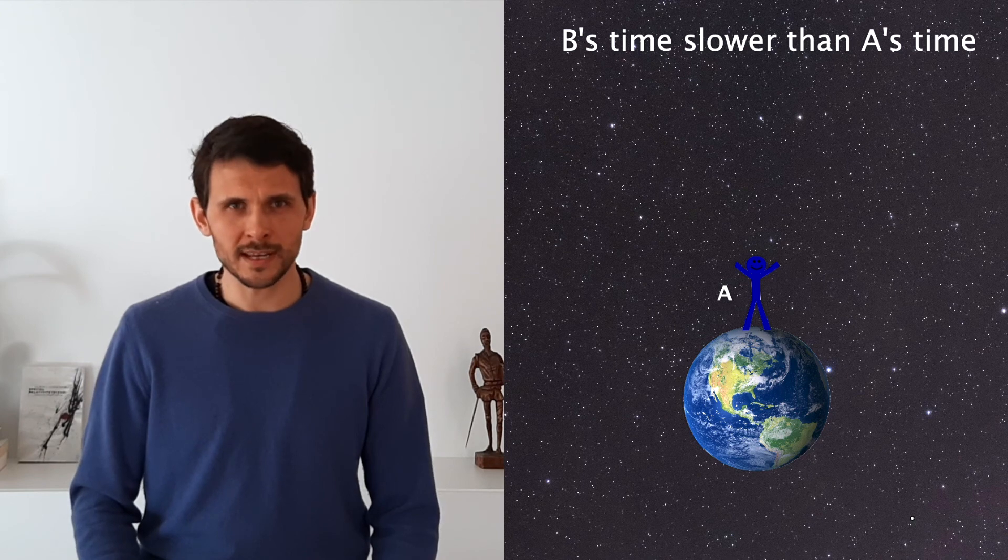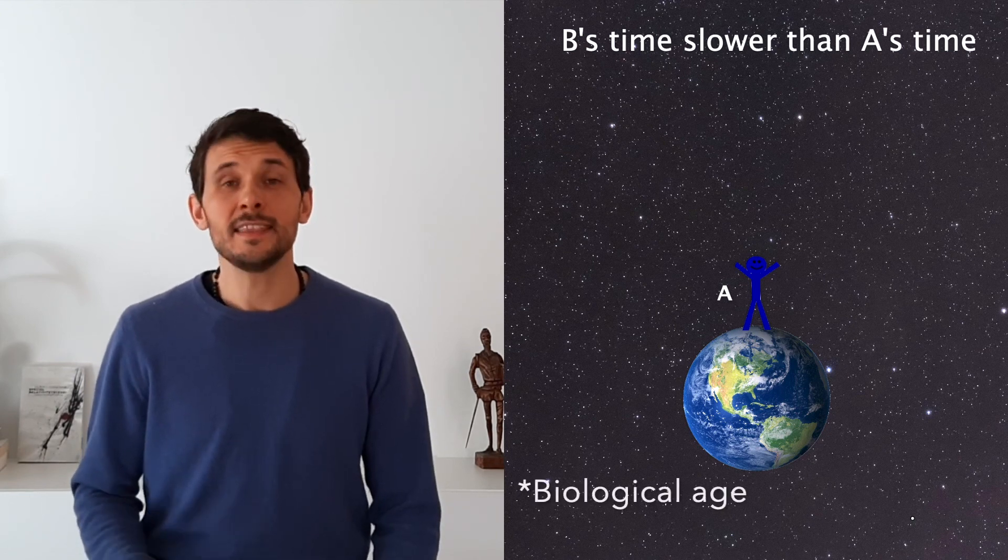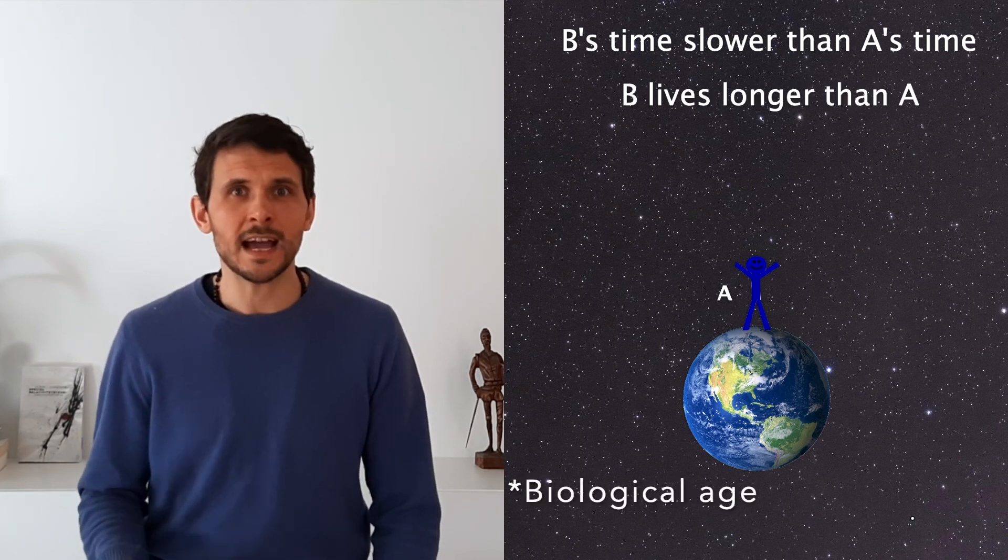If they were born on the same day and they both live 80 years, this means that observer A will die before observer B. But in special relativity, there is no ultimate motion. There is only relative motion.